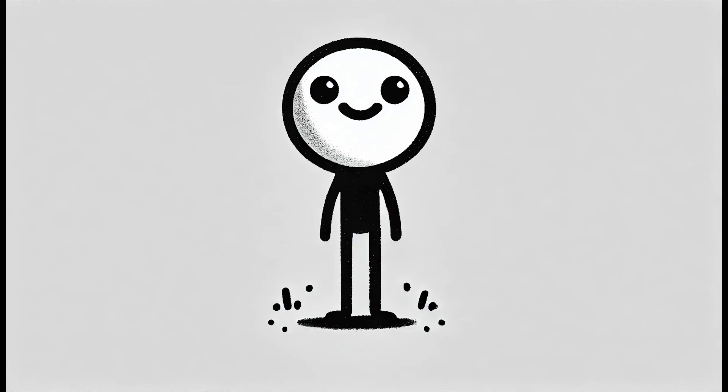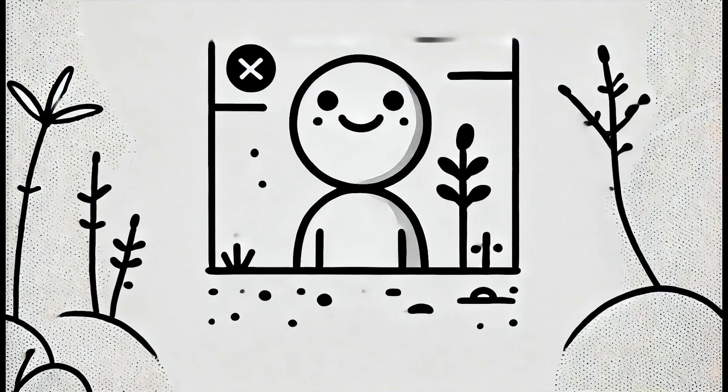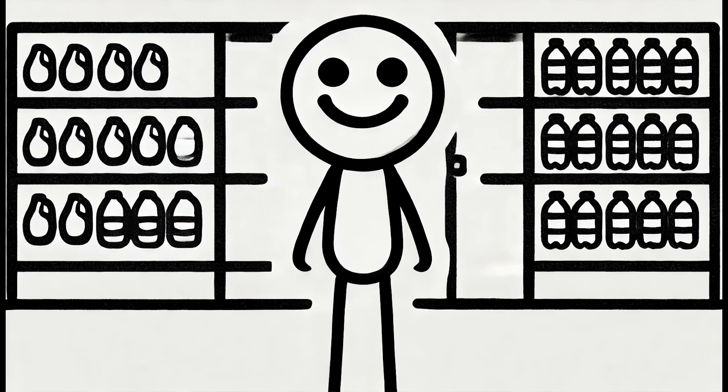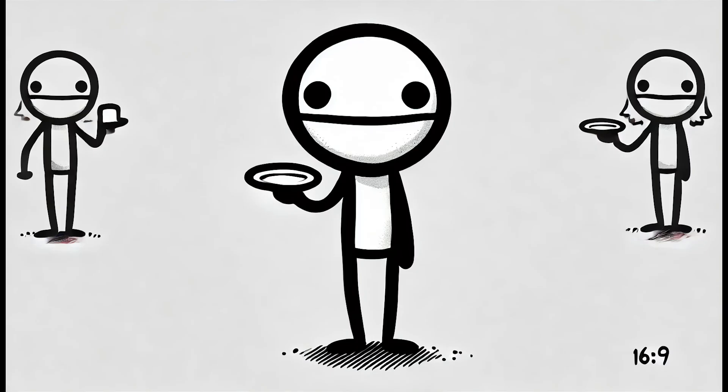But that's not all. Without the sun, plants can't do their job. You see, plants need sunlight to do something called photosynthesis. That's when they take sunlight and turn it into food. No sunlight means no photosynthesis, which means no plants. And if there are no plants, there's no food for animals. Or us.